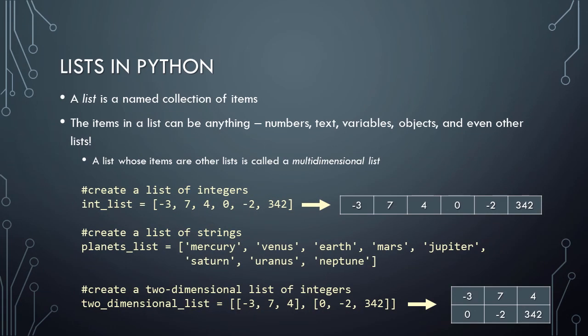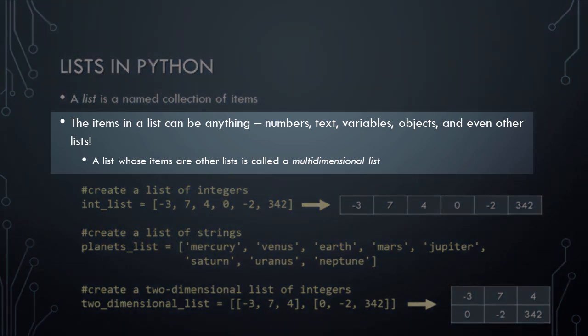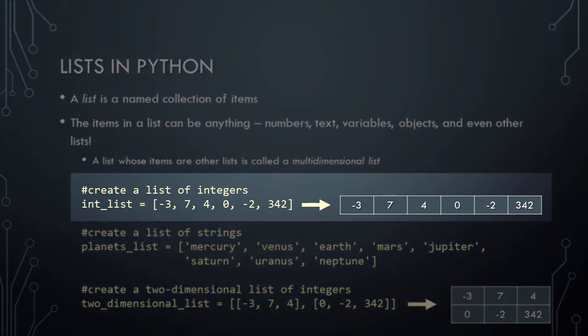We'll begin this lesson by discussing lists in Python. A list is simply a named collection of items. The items in a Python list can be anything — numbers, texts, variables, objects, and even other lists. Note that a list whose items are other lists is called a multidimensional list. In this first example, we're declaring a list named int_list and setting the values of its elements to -3, 7, 4, 0, -2, and 342. If it helps, you can think of a simple one-dimensional list like this as a vector.